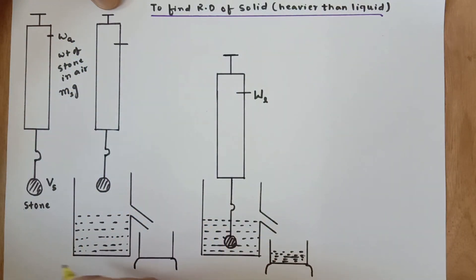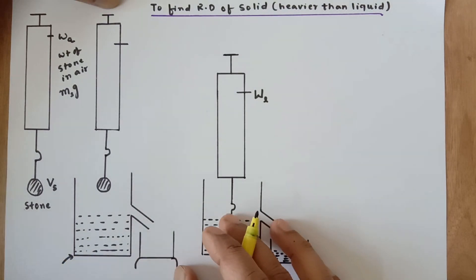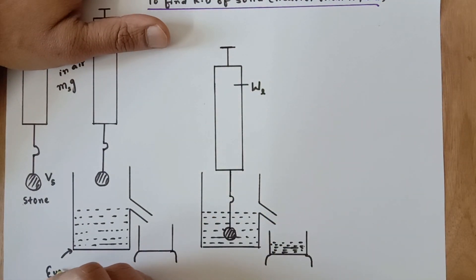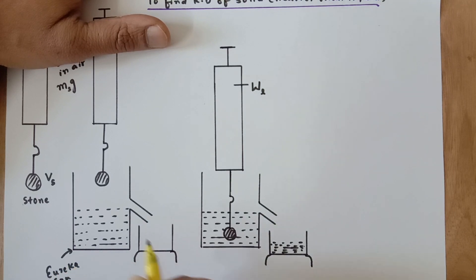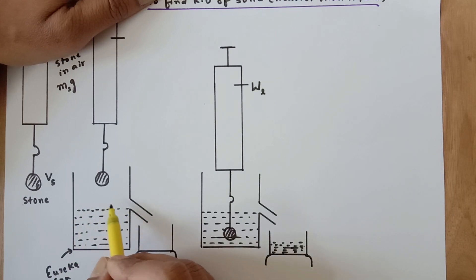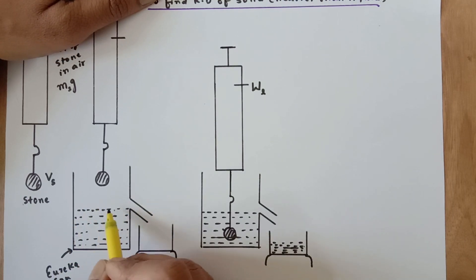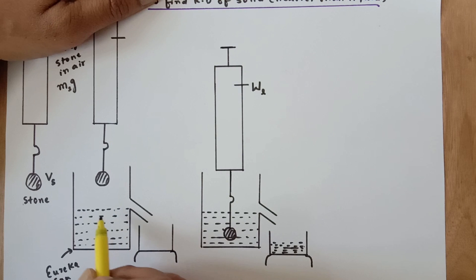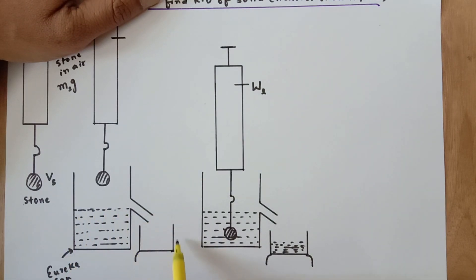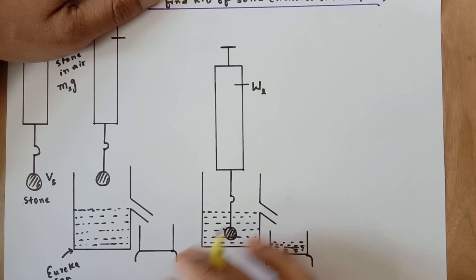This is the Eureka can, also known as overflow can or overflow jar, and it can be filled to a maximum level — if you try to fill more liquid it is going to overflow out. Right now it is completely filled, and this is an empty vessel placed over a digital weighing balance.